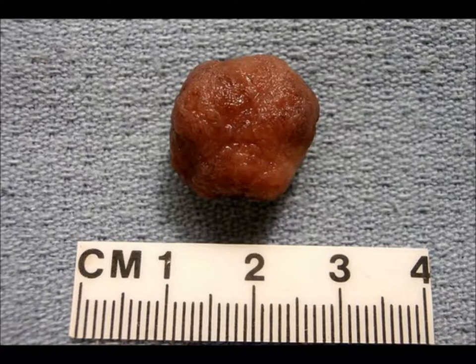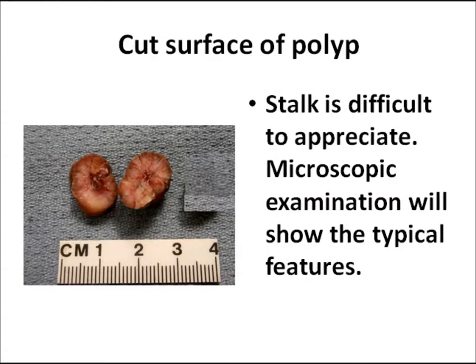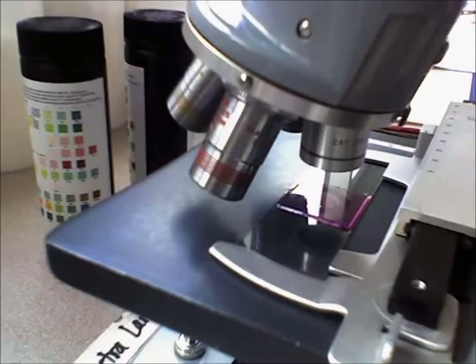Gross examination revealed a well-circumscribed pedunculated polyp with a smooth surface, red in color, 0.8 cm in diameter. Another specimen showed a smooth surface, reddish-brown in color, pedunculated, 2 cm in size. The cut surface of this specimen shows a pale area in the center and a reddish-brown outer surface. In summary: a well-circumscribed, pedunculated, 2 cm mass with smooth surface, inner pale area, and outer reddish-brown area on cut surface.